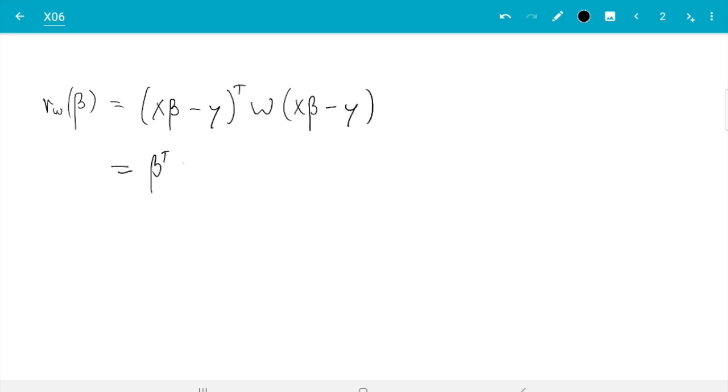So we get βᵀXᵀWXβ - 2βᵀXᵀWy + yᵀWy. First observation: as before, that term does not depend on β, so when we take derivatives that will not contribute anything.